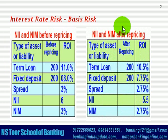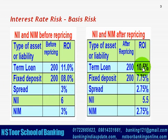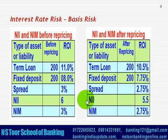Now let us see the position after repricing. The term loan interest rate has come down from 11% to 10.5% as a result of change in the government security yield. Similarly, the fixed deposit interest rate which was 8% earlier has come down to 7.75%. So the spread has come down to 2.75% — in the previous case it was 3% and now it is 2.75%. Based on this, the net interest income which was 6 lakh earlier has now come down, and net interest margin which was 3% earlier has now come down to 2.75%.